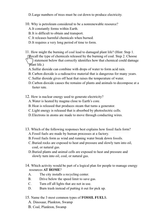Number 11. How might the burning of coal lead to damaged plant life? Hint. Step 1. Recall the type of chemicals released by the burning of coal. Step 2. Choose the statement below that correctly identifies how that chemical could damage plant life. A. Sulfur dioxide can combine with drops of water to form acid rain. B. Carbon dioxide is a radioactive material that is dangerous for many years. C. Sulfur dioxide gives off heat that raises the temperature of water. D. Carbon dioxide causes the remains of plants and animals to decompose at a faster rate.